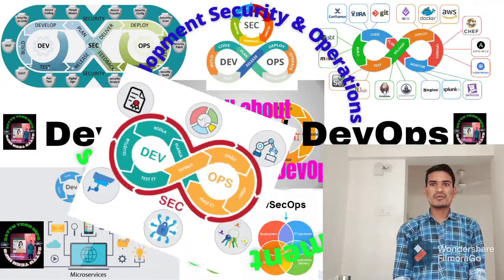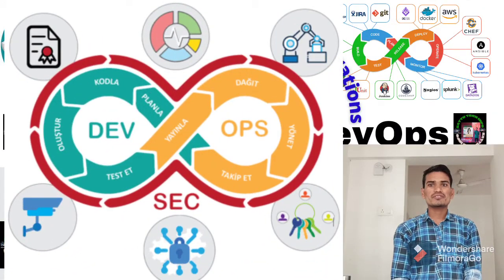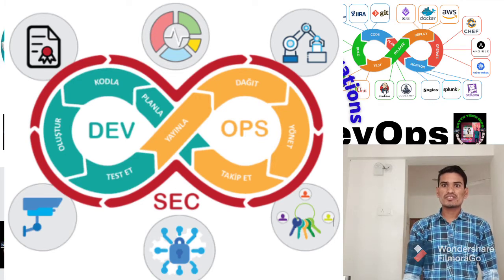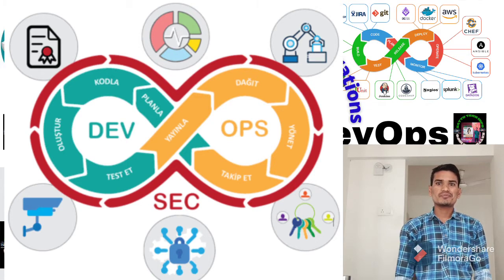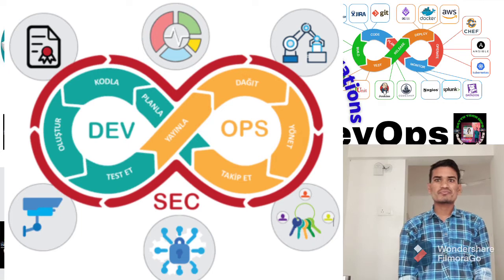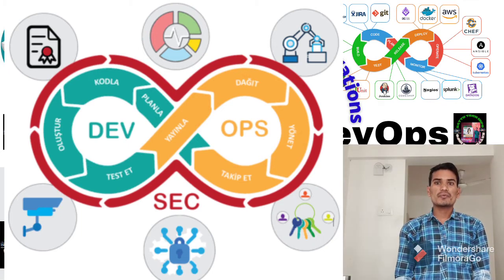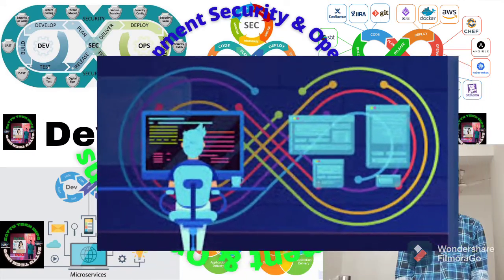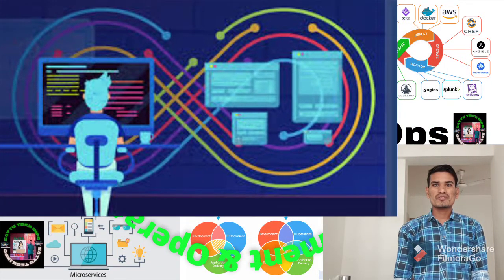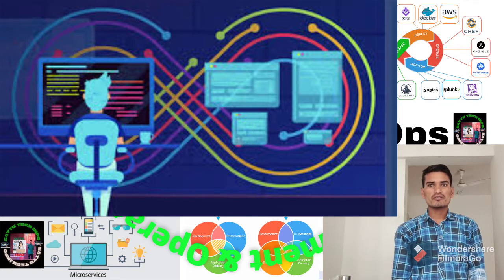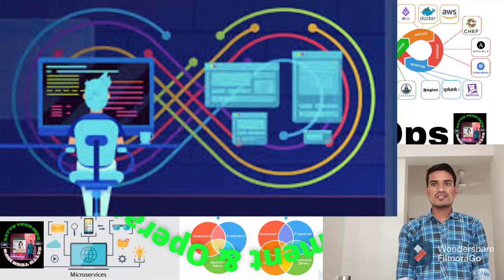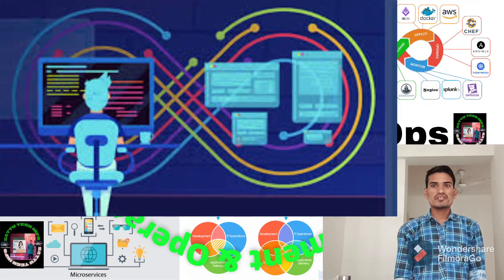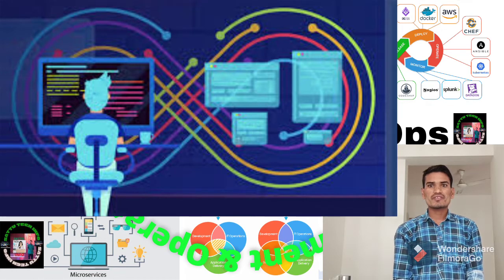DevSecOps is the addition of security to DevOps. It is an overall process to ensure that security is backed into the entire software development cycle. DevSecOps is a logical extension of DevOps. DevOps integrates operations into the develop or release cycle, whereas DevSecOps integrates security into the develop or release cycle.